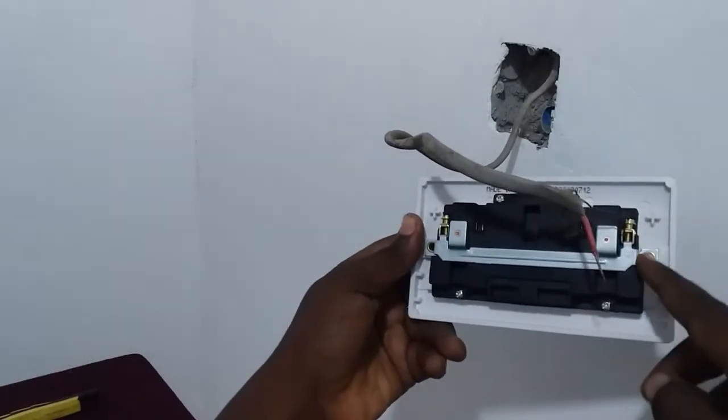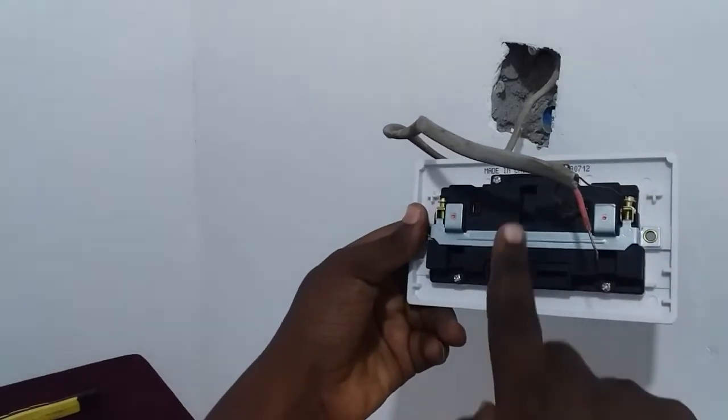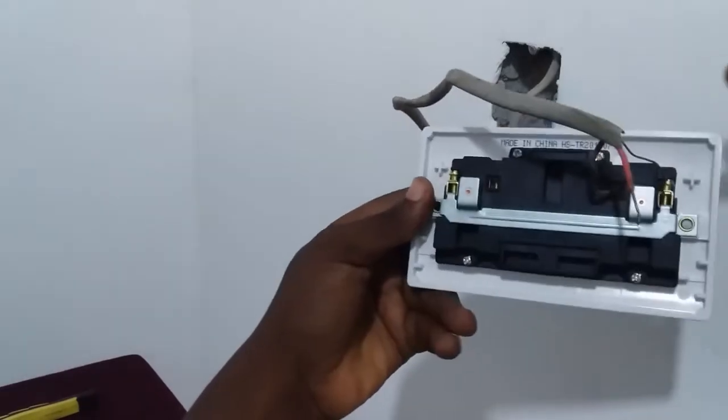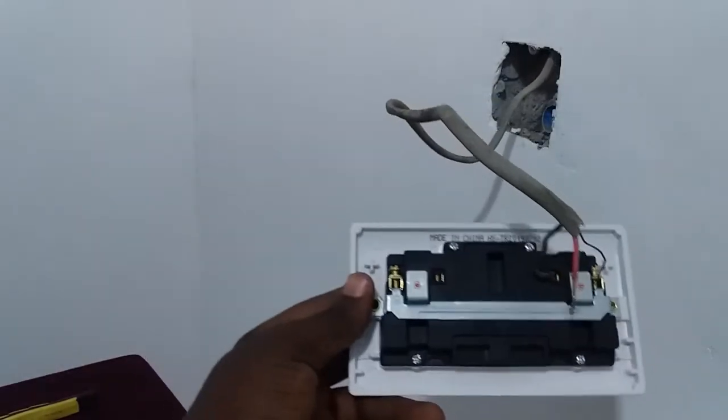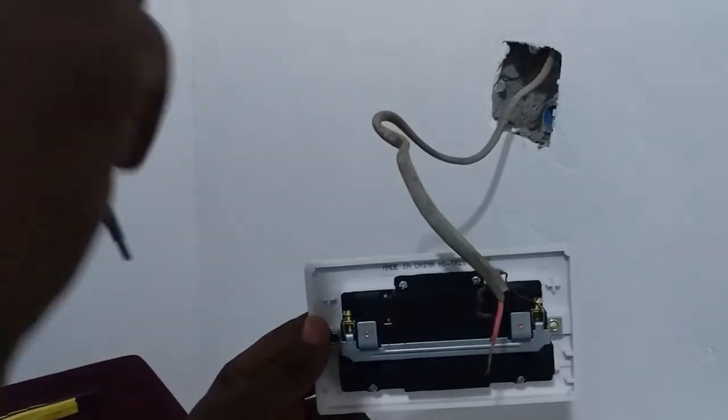The ground wire is installed in this spot, you can install it here or here. Neutral wire has already gone in this spot while the live wire will be on this side.